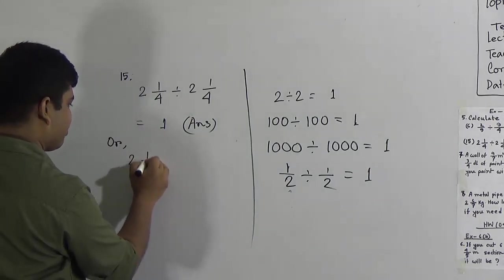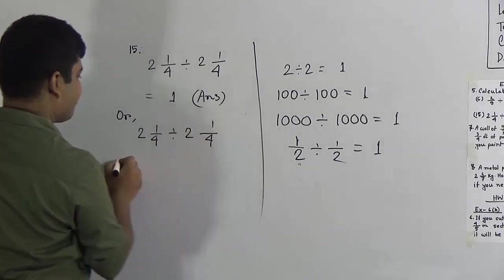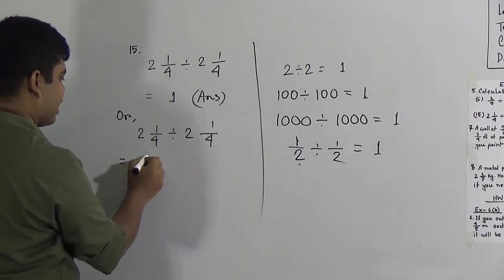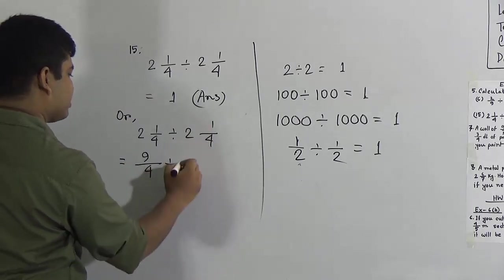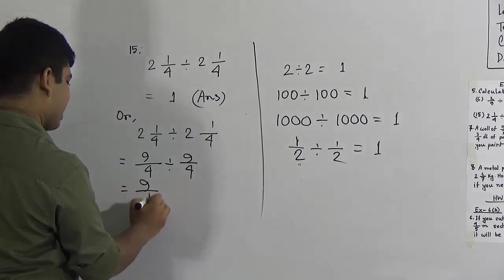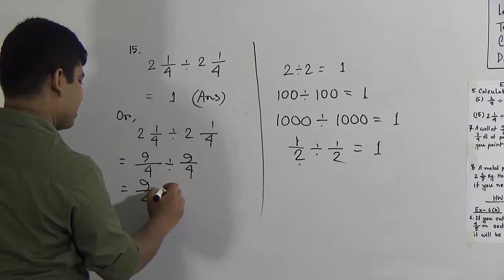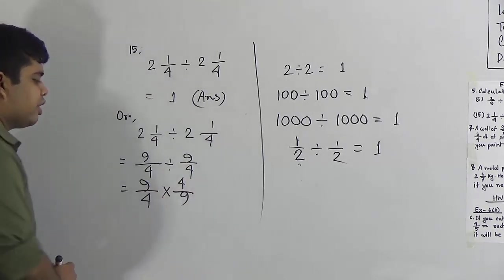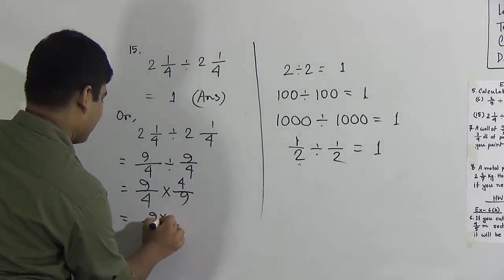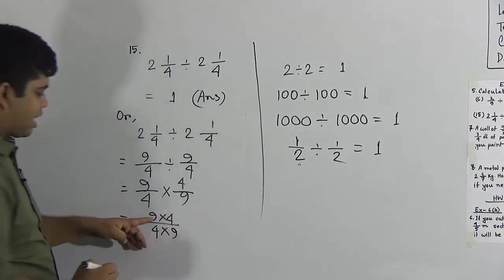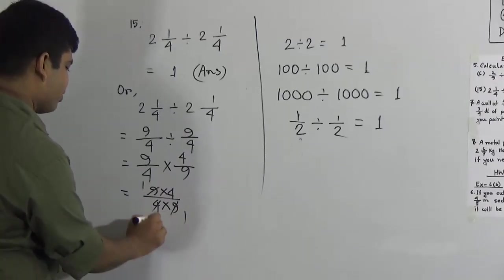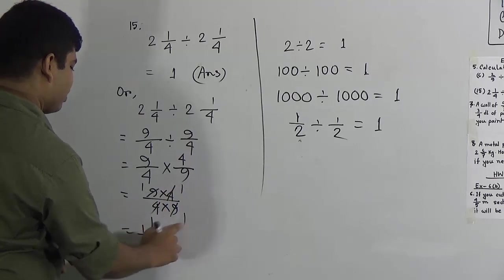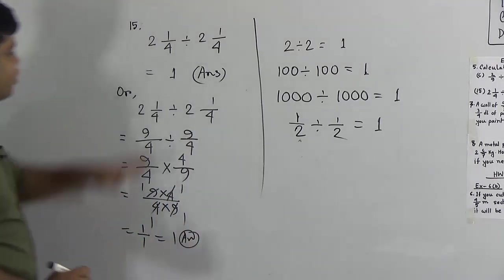Using the standard method: write 2 and 1/4 divided by 2 and 1/4. First convert the mixed fraction to an improper fraction: 4 × 2 = 8, plus 1 = 9, so 9/4 divided by 9/4. Change division to multiplication and reverse the second fraction: 9/4 × 4/9. We can cancel 9 by 9 and 4 by 4, leaving 1 × 1 over 1 × 1 = 1. So the answer is 1. Both methods give the correct answer.